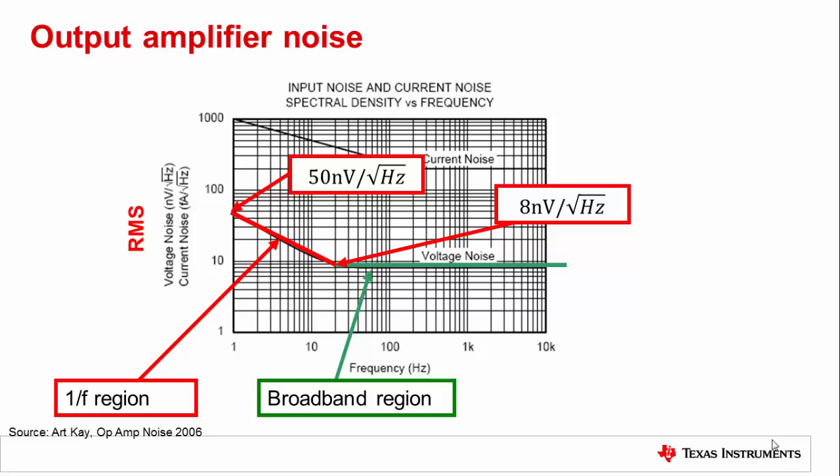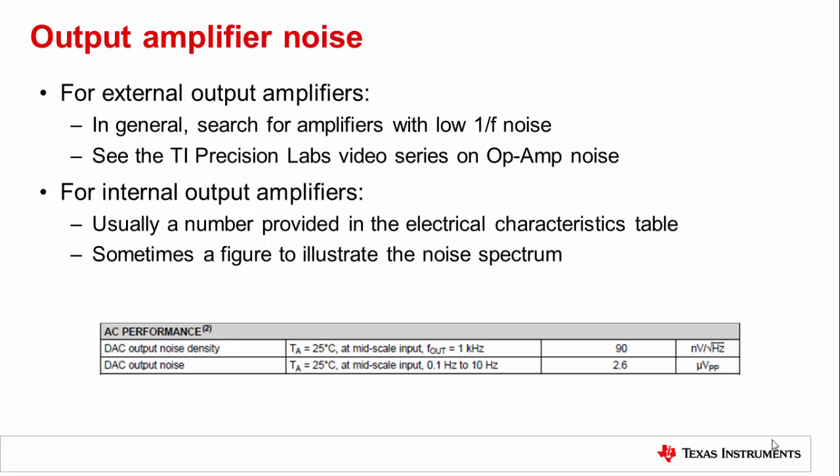The key thing to illustrate here is that in a typical application, our focus will be on DC operating conditions where the bandwidth is limited, and the broadband region will not contribute significant noise. As a best practice when your amplifier is external, search for devices with low 1/f noise. When it comes time to do noise estimations for your design, check out the TI Precision Labs video series on op-amp noise for guidance on how to calculate your amplifier noise. When the amplifier is internal to the DAC, most of the work is already done for you, and the noise is characterized in the DAC datasheet. You can generally find a noise number in the electrical characteristics, and a plot of the noise spectrum with other graphs further in the document.